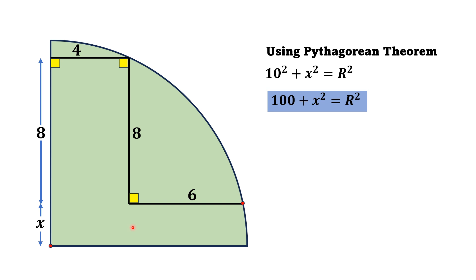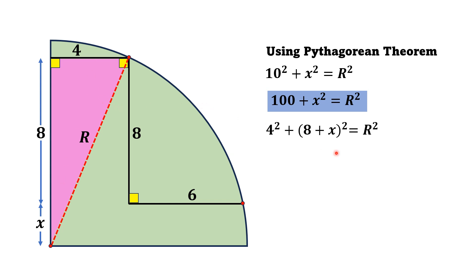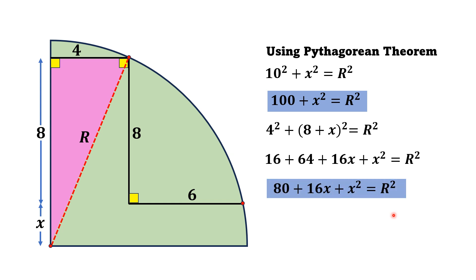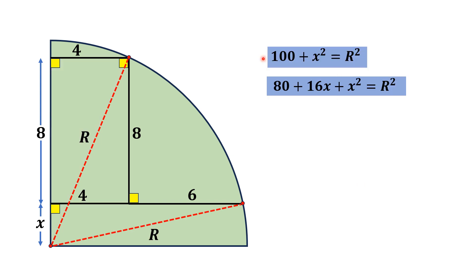Now we draw another radial line from this point to this point, and since this is a radius we call it capital R. Here we have another right triangle — the pink shaded one — in which the hypotenuse is R, one leg is four, and the other leg is eight plus x. Using the Pythagorean theorem: 4² + (8 + x)² = R². Expanding the left side: 16 + 64 + 16x + x² = R², which simplifies to 80 + 16x + x² = R².